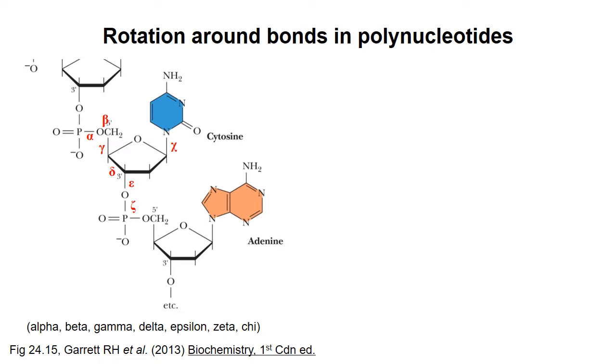A seventh bond around which rotation can occur is the N-glycosidic bond joining the sugar to the base. This is known as the chi-bond. In nucleotides, the base adopts one of two main conformations, syn or anti. Both of these bases are shown in the anti-conformation with the rings of the purine or the oxygen of the pyrimidine oriented away from the sugar.